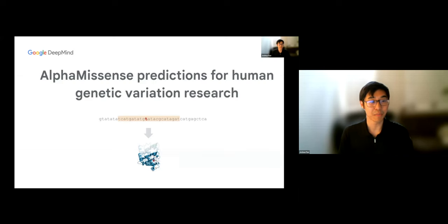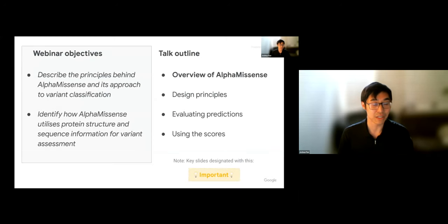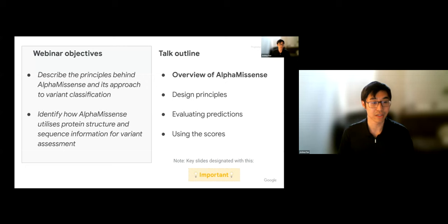My name is Josh. I'm here on behalf of the AlphaMissense team to present today's webinar on AlphaMissense predictions for human genetic variation research. The objectives of this component are twofold: to describe the principles behind AlphaMissense and how it works, and to identify how AlphaMissense utilizes protein structure and sequence information for variant assessment.